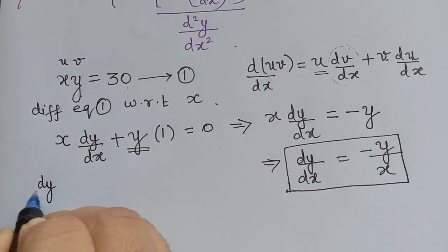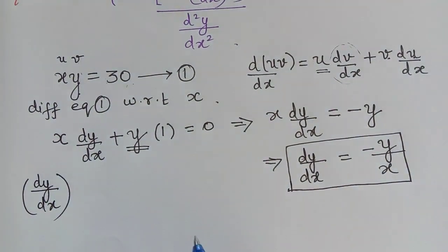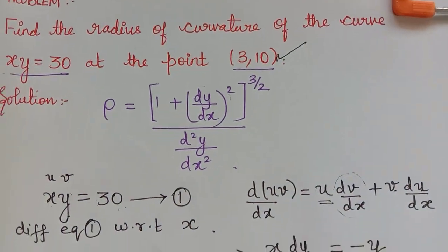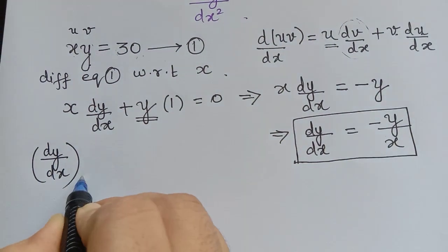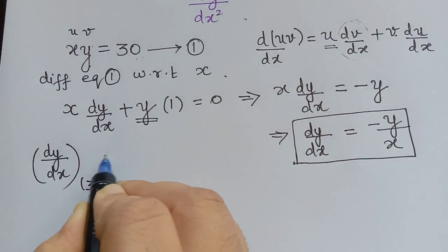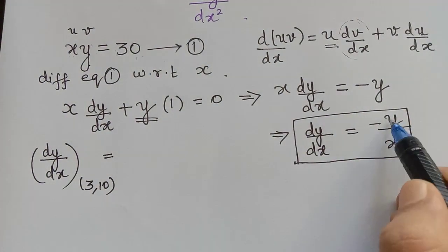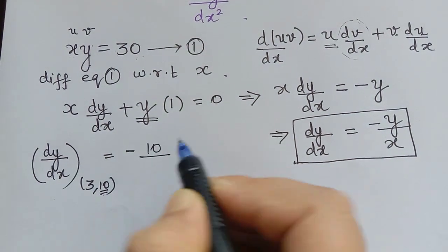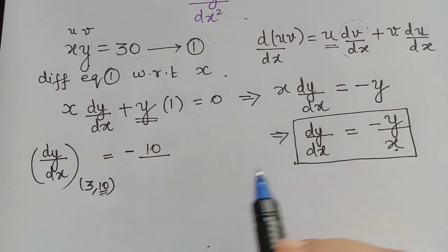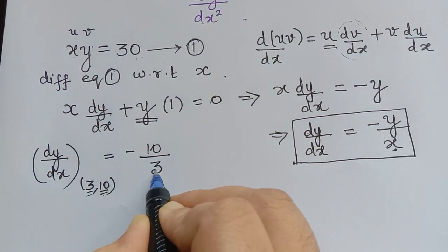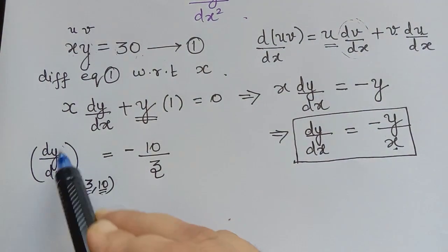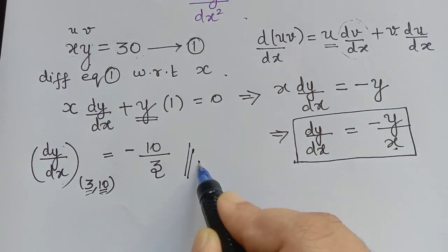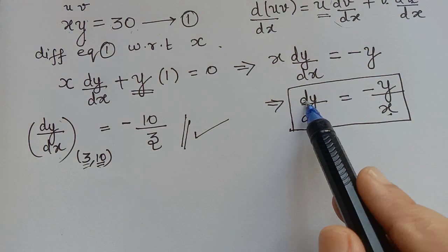Now we evaluate dy/dx at the given point (3, 10). Substituting x = 3 and y = 10, we get dy/dx = −10/3. So dy/dx at the point (3, 10) is equal to −10/3.